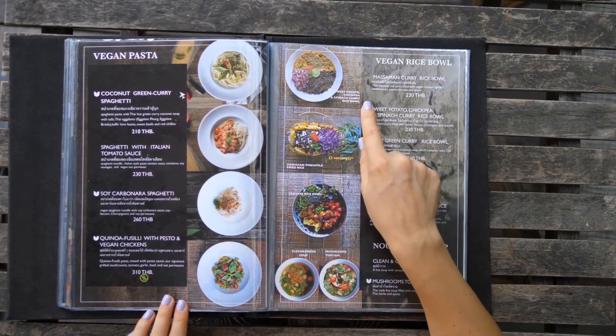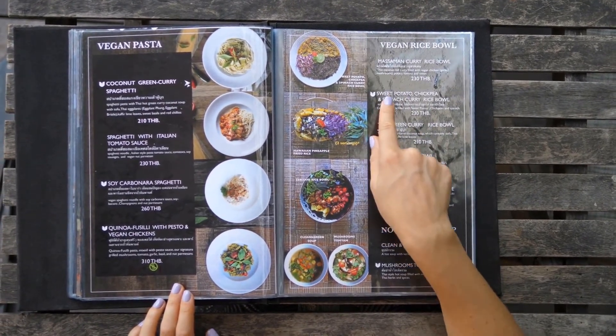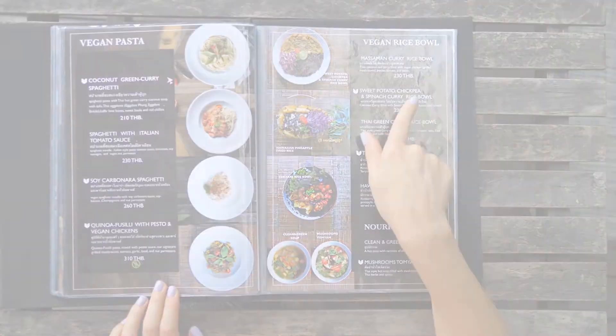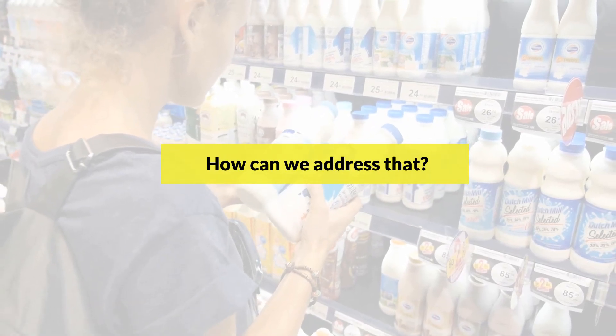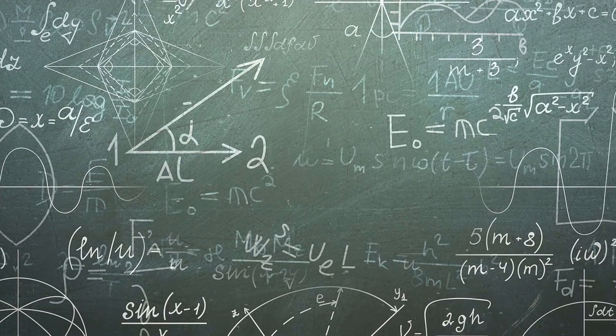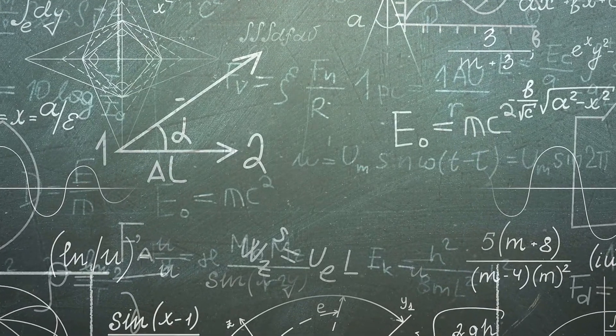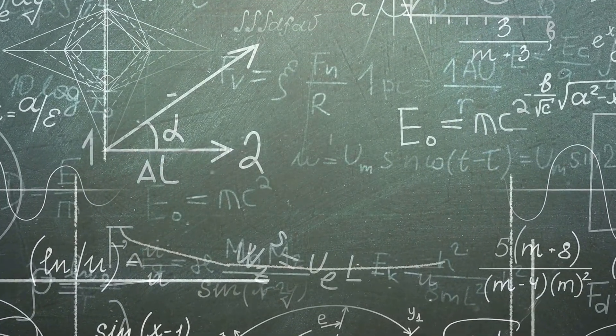So how can we address that? How can we make sure that we don't get overwhelmed when we're making a decision? As a consumer, you need to use a prioritization system when you're making a choice.